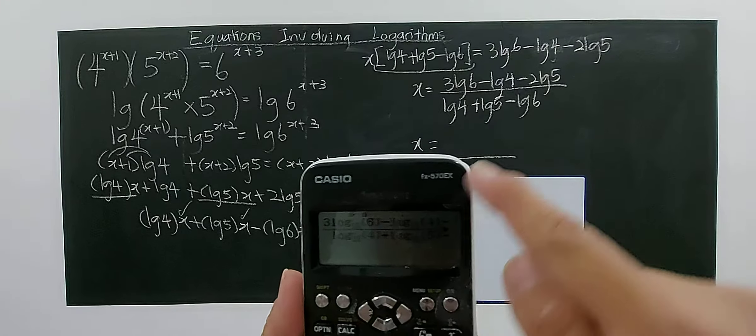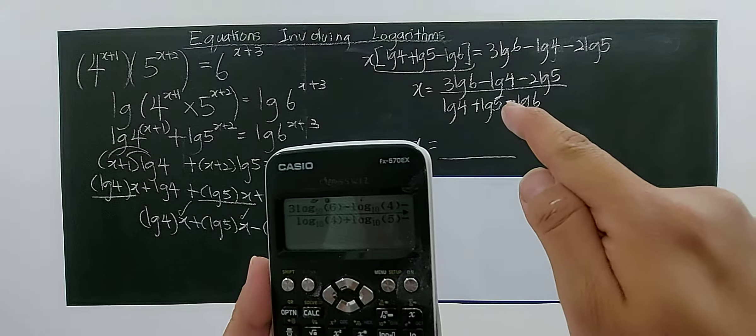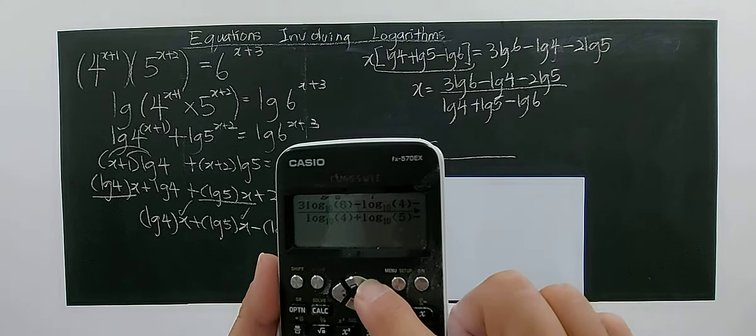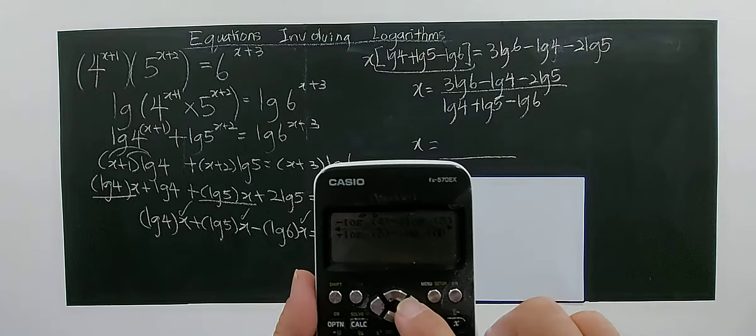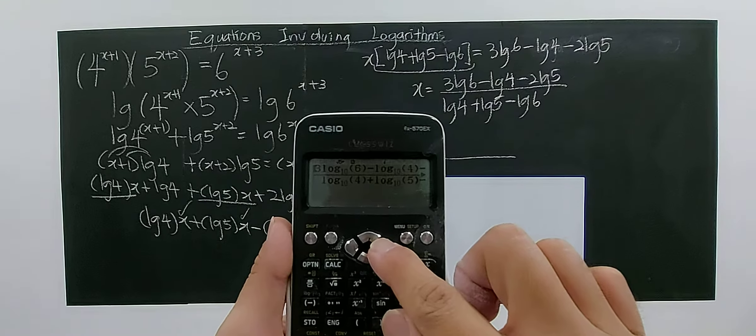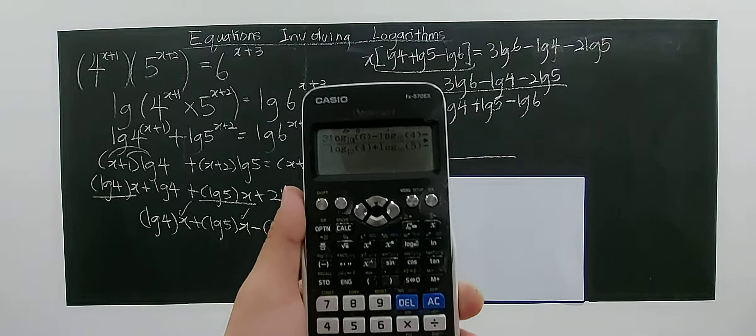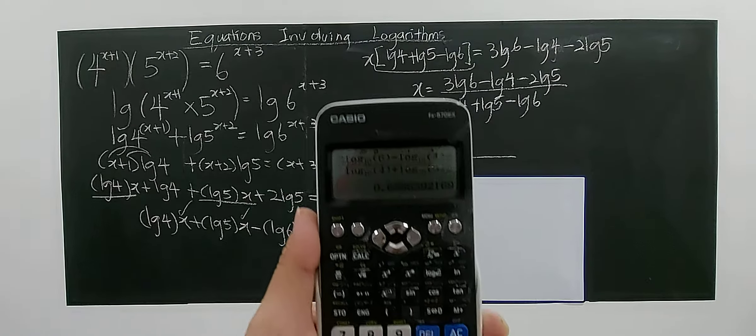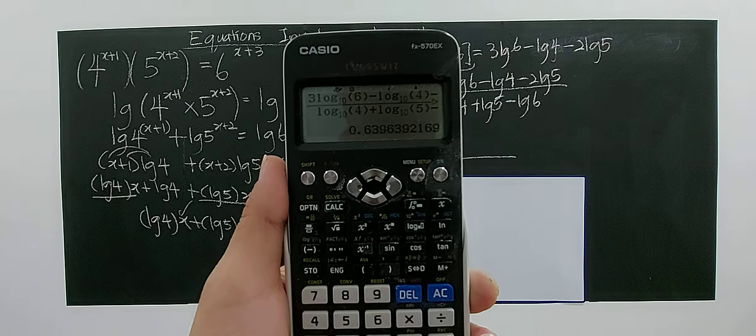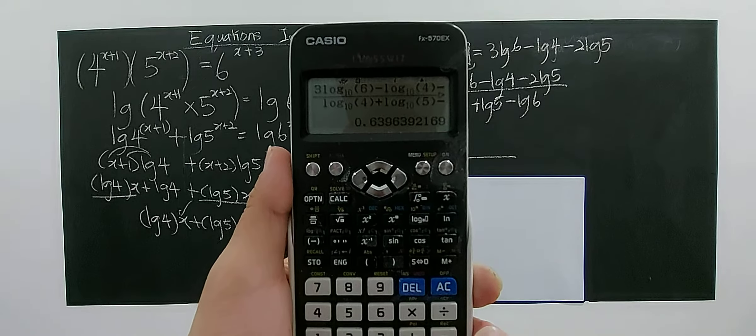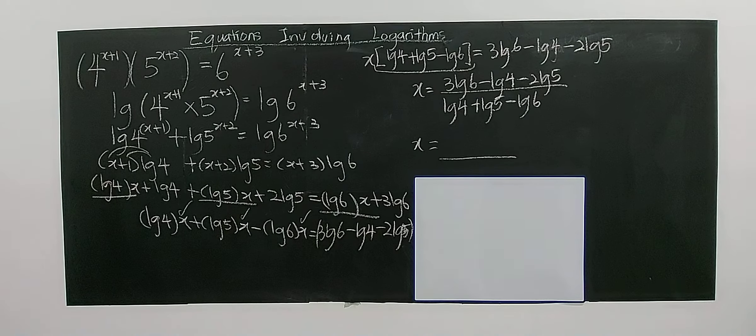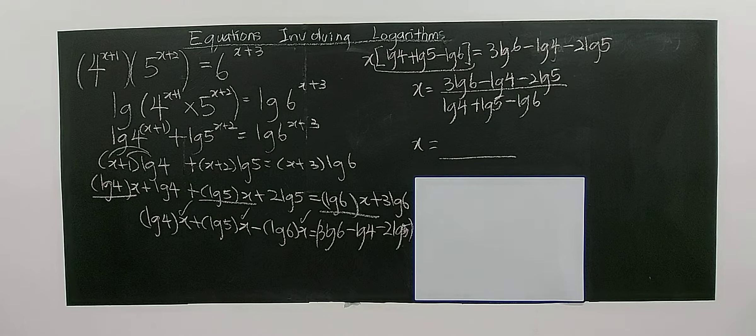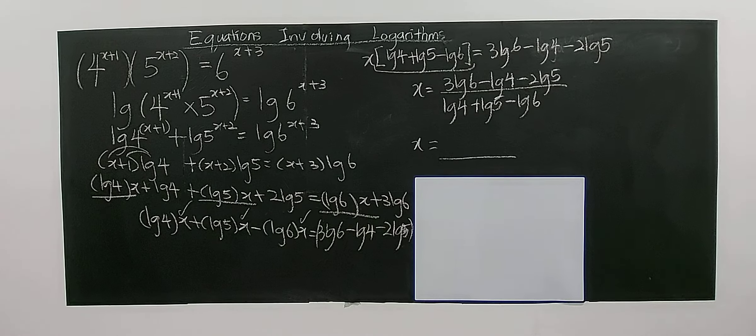Check that you have 3log₁₀6 - log₁₀4 - 2log₁₀5 keyed in correctly. Press equals and you get 0.6396. If you round off to two decimal places, it becomes 0.64. This is your solution for this problem.